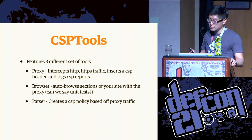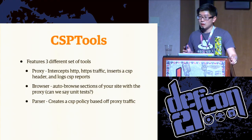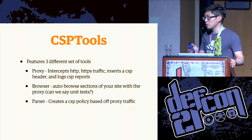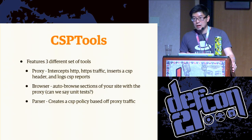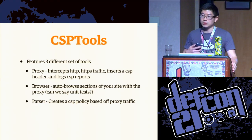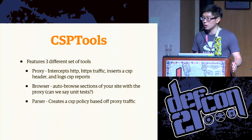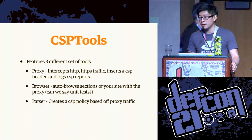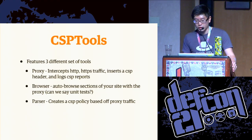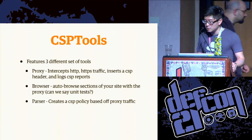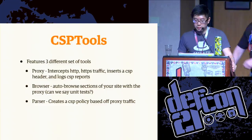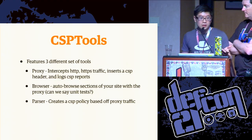CSP Tools is essentially a set of three Python-based tools. The proxy tool is a Python proxy written using libmproxy that intercepts all HTTP and HTTPS traffic. If you connect to this proxy, it will dynamically insert a content security policy report-only header with the policy you've specified, and also capture any CSP violations the browser sends back to the proxy endpoint. The browser tool is a Selenium-powered instance of Firefox that allows you to create unit tests for content security policies deployed to specific pages. And the parser tool takes those violations and generates a content security policy from them.